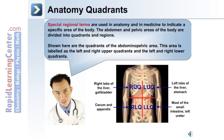Anatomy quadrants: special regional terms are used in anatomy and medicine to indicate a specific area of the body, specifically in the abdomen and pelvic areas. Shown here in the image are the quadrants of the abdominal pelvic area. On the left side of the image as you look at it is the right upper quadrant; beneath that is the right lower quadrant.